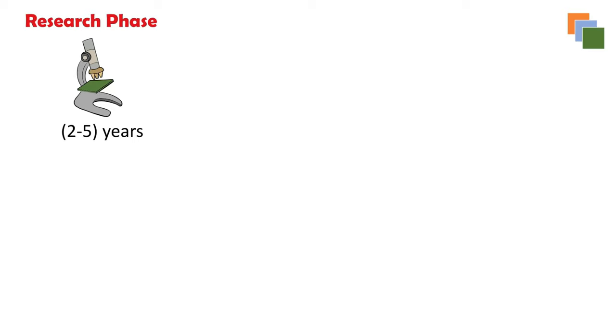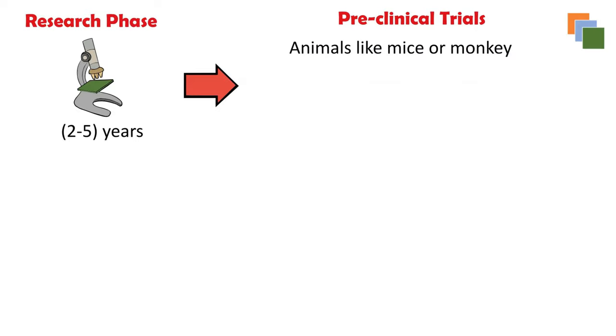To understand why it takes so long, one needs to understand the stages involved in vaccine development and testing. The first stage is the research stage, used to identify the natural antigens that can induce an immune reaction in the body. This usually takes two to five years. In this phase, it is also decided what type of vaccine to make — live attenuated, inactivated, and so on. The next stage is pre-clinical trials, where initial testing is done on animals such as mice or monkeys to evaluate immune response and safety.